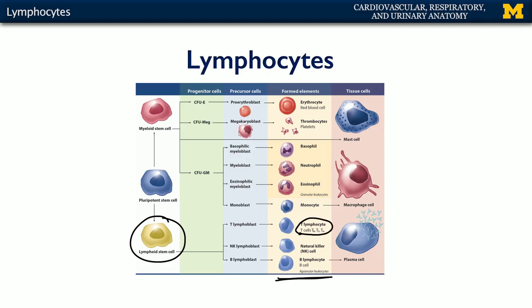T lymphocytes, B lymphocytes, and natural killer cells, which often behave like cytotoxic T lymphocytes, as we'll see.